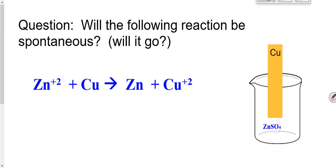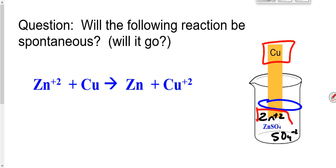What would happen if we tried it the other way? What if I tried putting copper metal into a solution of zinc sulfate? Zinc sulfate contains Zn²⁺ ions and sulfate²⁻ ions. So the question is: will I get a reaction between copper metal and Zn²⁺ ions? If it went, we would have electrons being transferred from the copper onto the zinc — zinc being reduced and copper being oxidized.